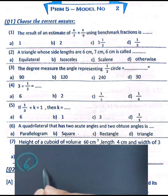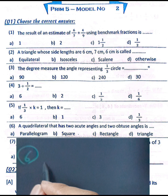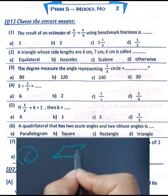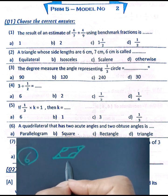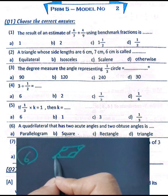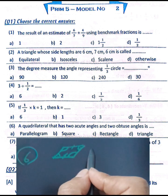Question number six: a quadrilateral that has two acute angles and two obtuse angles is called a parallelogram. We have two acute angles and two obtuse angles. The properties of a parallelogram are that each pair of opposite angles are equal in measure, each pair of opposite sides are equal in length and parallel. The answer is A.